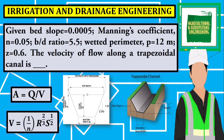Given: bed slope of 0.0005, Manning's coefficient n is equal to 0.05, b over d ratio is 5.5, wetted perimeter p is equal to 12 meters, and z is equal to 0.6. The velocity of flow along a trapezoidal canal is blank.